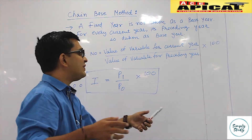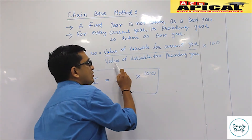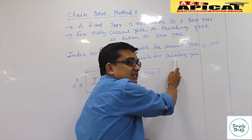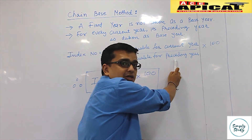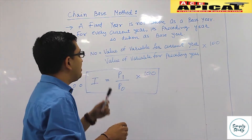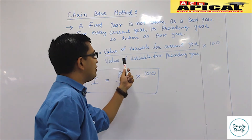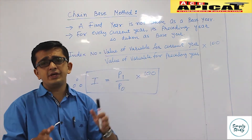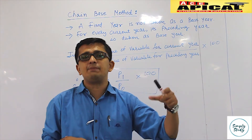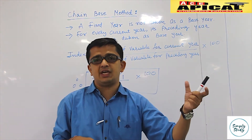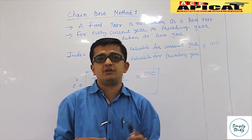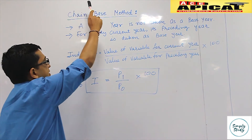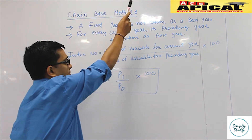In the fixed base method we used to write the value of the variable of the fixed year in the denominator, whereas in the chain base method it becomes the value of the variable of the preceding year. The base year will constantly keep changing as the preceding year differs for every year — that's why it is known as the chain base method.